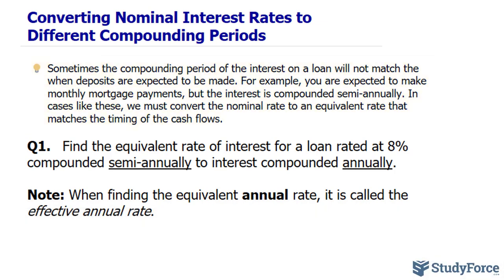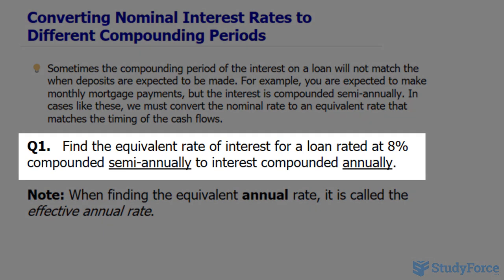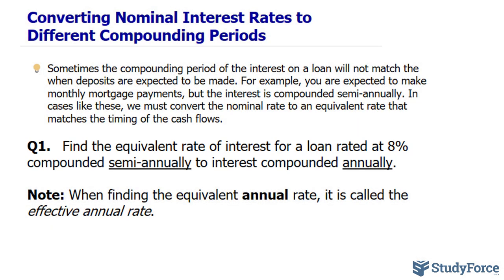With that being said, let's begin with question number one. The question reads: find the equivalent rate of interest for a loan rated at 8% compounded semi-annually to interest compounded annually. Just a quick note before I show you how to do this. Notice that we're going from semi-annually to compounded annually. This gets a special name called the effective annual rate.